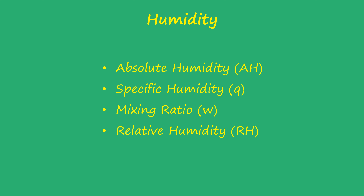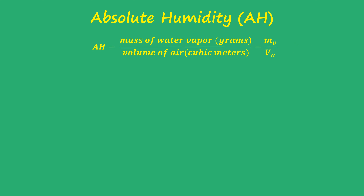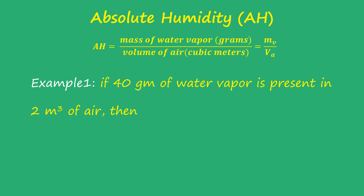Absolute humidity is defined as the mass of water vapor per unit air volume and is denoted by AH. The definition is mathematically represented here, where MV is the mass of water vapor in grams and VA is the volume of air in cubic meters. For example, if 40 grams of water vapor is present in 2 cubic meters of air, then the absolute humidity is 40 divided by 2, which equals 20 grams per cubic meter.